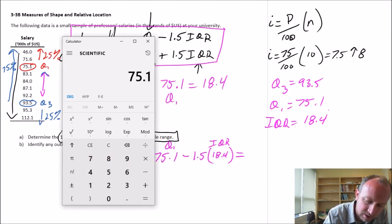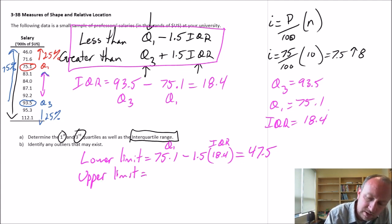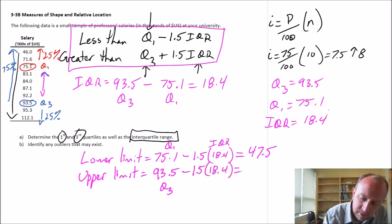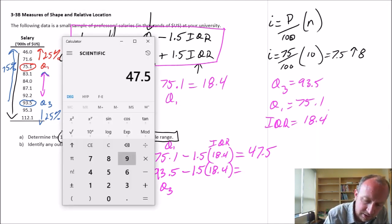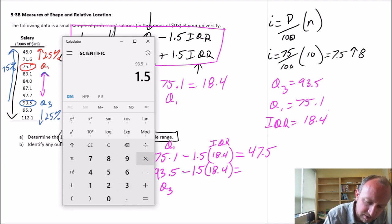My upper limit is Q3, so 93.5 is Q3, so 93.5 plus 1.5 times 18.4. 93.5 plus 1.5 times 18.4 is 121.1.